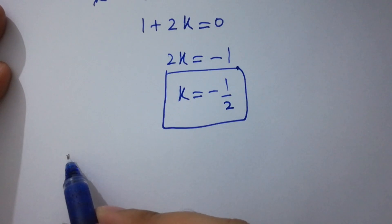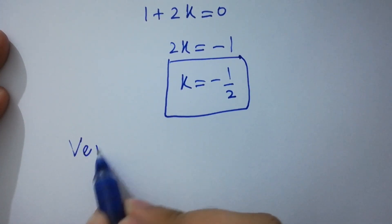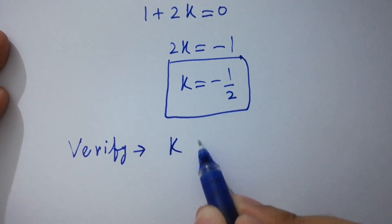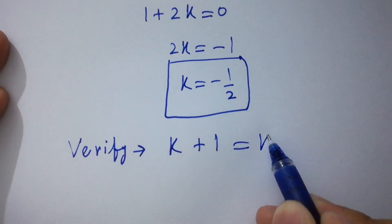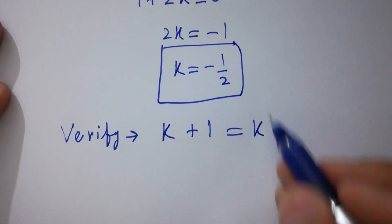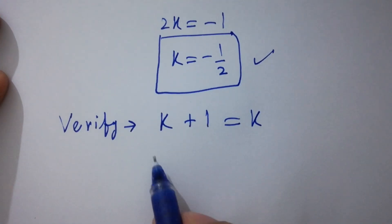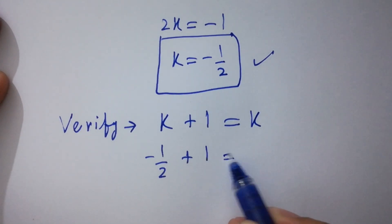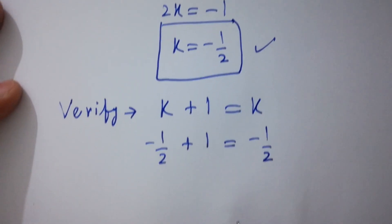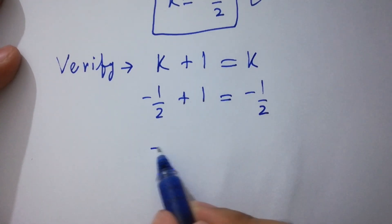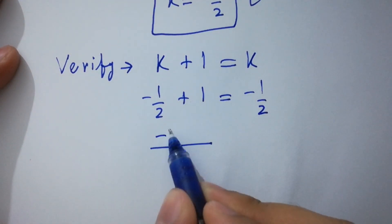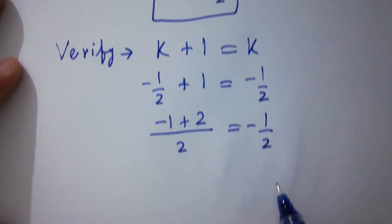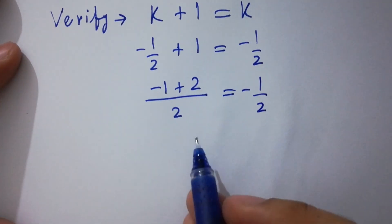Now, I am going to verify. k plus 1 equal to k. Put the value of k which is equal to minus 1 over 2. Minus 1 over 2 plus 1 equal to minus 1 over 2. Take LCM. We have minus 1 plus 2 over 2 equal to minus 1 over 2. We have here plus 1.